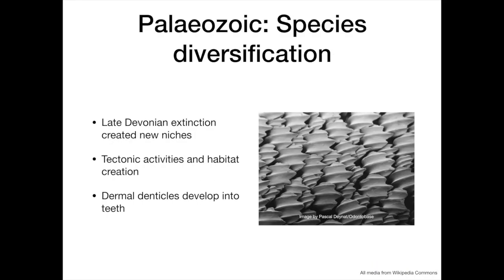During the Paleozoic, a great species diversification, or adaptive radiation, occurred. The late Devonian extinction wiped out a large proportion of predators, creating new niches into which the Chondrichthyes could radiate. This coincided with tectonic movements, significantly increasing the prevalence of shelf habitats that these fish inhabit.